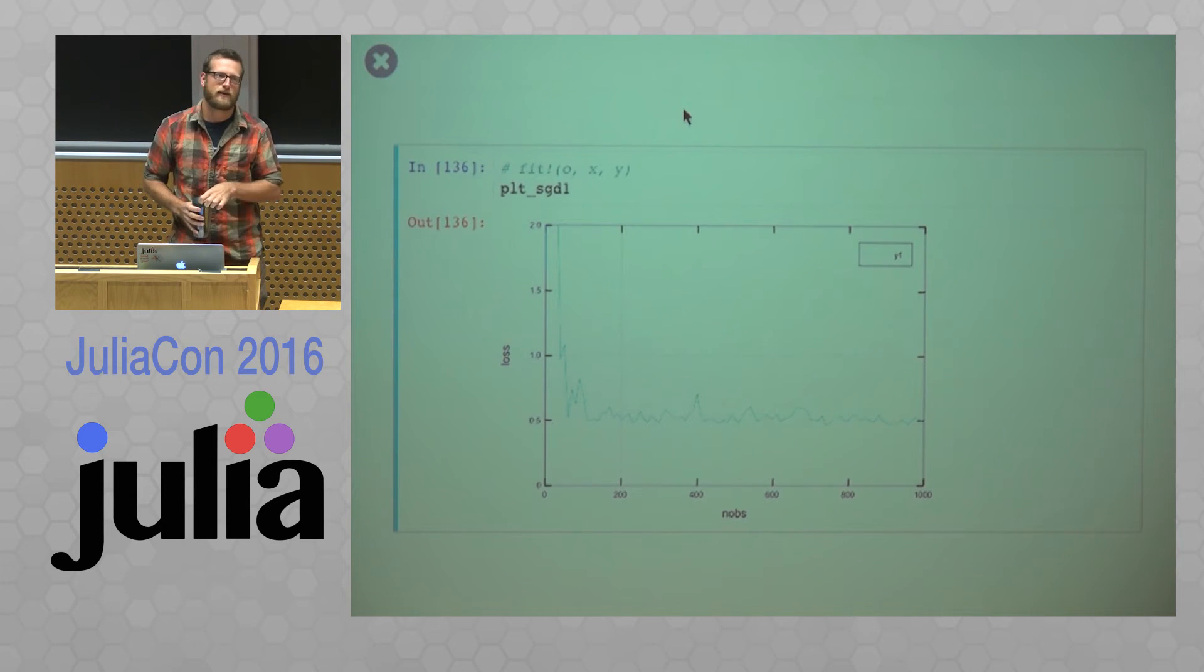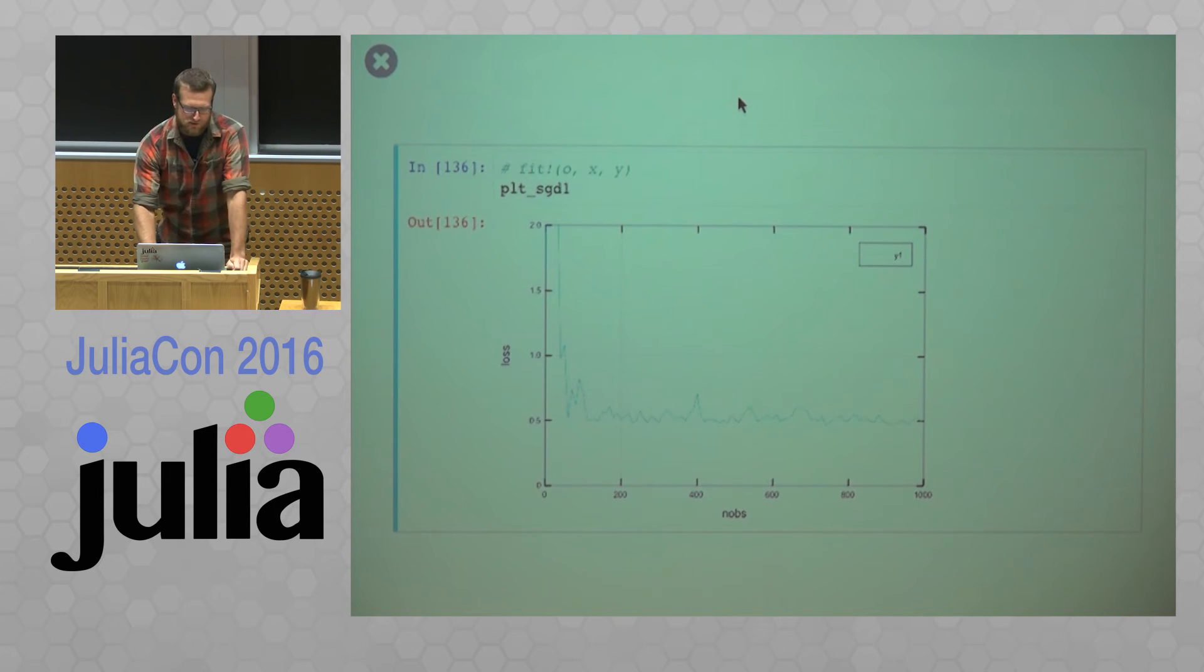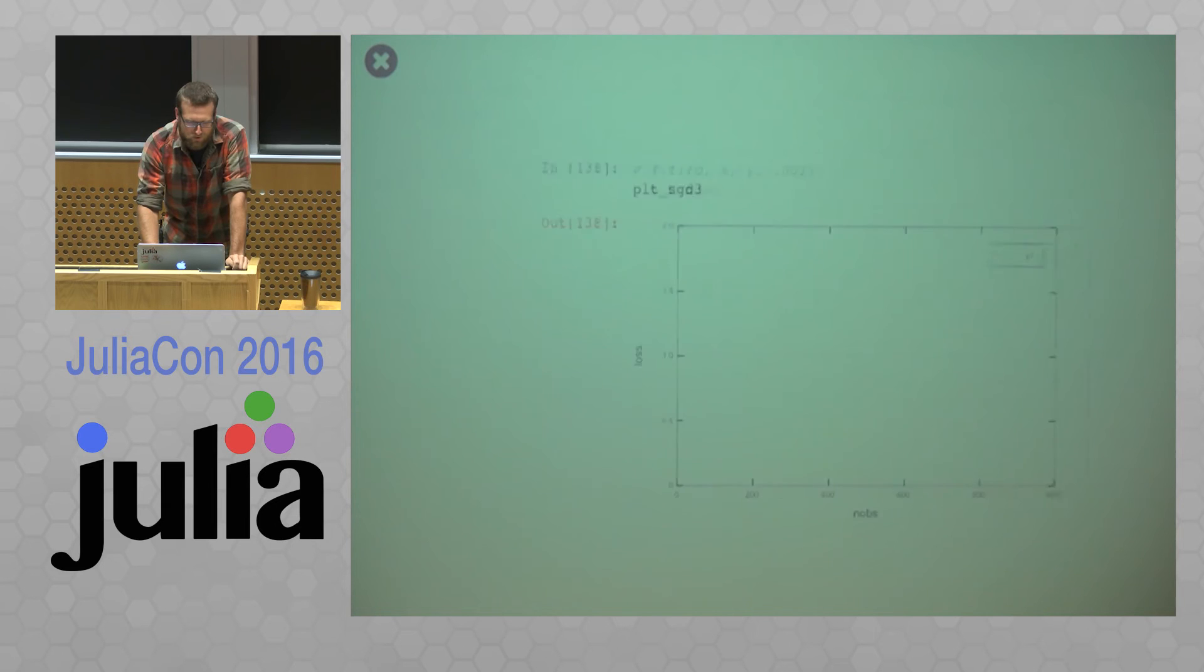So people often do batches for stochastic gradient descent. So here we're giving it a batch value of 10. And we can see that this is quite a bit smoother. And then one other option, say I just want to override all the weights with 0.001.